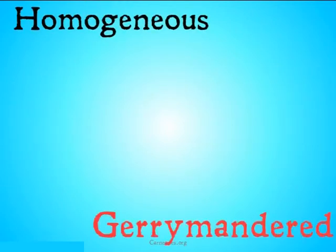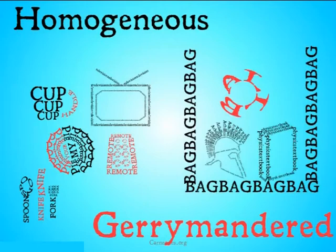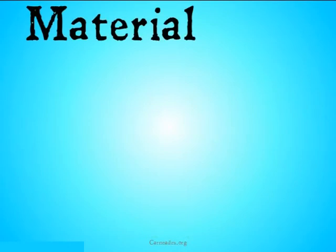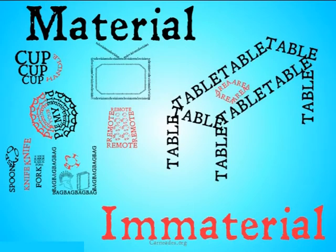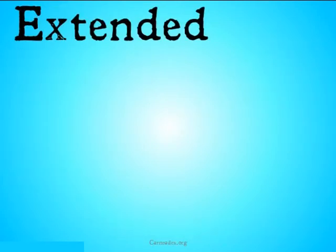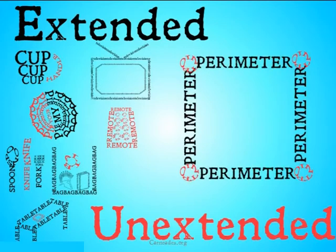You can have homogeneous parts and gerrymandered parts. Homogeneous parts are things like the handle of the cup, your piece of pie, the remote to the TV, or the knife, while a gerrymandered part might be the ball as part of the things that I have in my bag. You can have material parts and immaterial parts. Material parts would be things like the handle of the cup, your piece of pie, the remote, the knife, or the ball in the bag, while an immaterial part might be the area above part of a table or part of a living room. You can have extended parts or unextended parts. Extended parts are things like the handle of the cup, your piece of pie, the remote, the knife, the ball in the bag, or the area above the table, while unextended parts are going to be things like points on a perimeter.